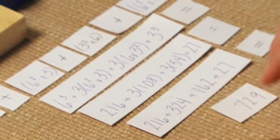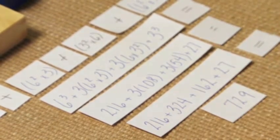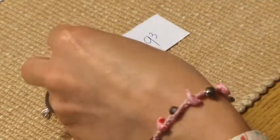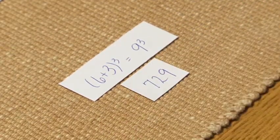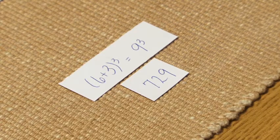Which will equal 729. They can check their work by taking 6 plus 3 cubed, or 9 cubed. 9 cubed equals 729, and that shows that their work is correct.